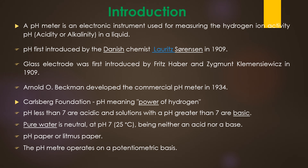A pH meter is an electronic instrument used for measuring the hydrogen ion activity in a liquid. In other words, this instrument measures the acidity or alkalinity of a solution. The degree of hydrogen ion activity is expressed as pH level, which generally ranges from 1 to 14. The concept of pH was first introduced by Danish chemist Lauritz Sørensen in 1909. The concept of the glass electrode was first introduced in the same year by Nobel Prize-winning German chemist Fritz Haber and his student Zygmunt Klemensiewicz. The commercial pH instrument was first developed by Arnold O. Beckman in 1934.